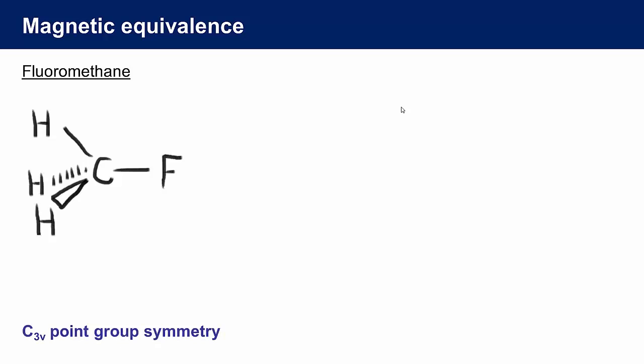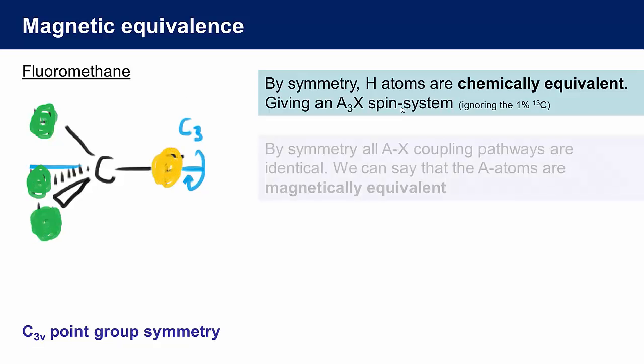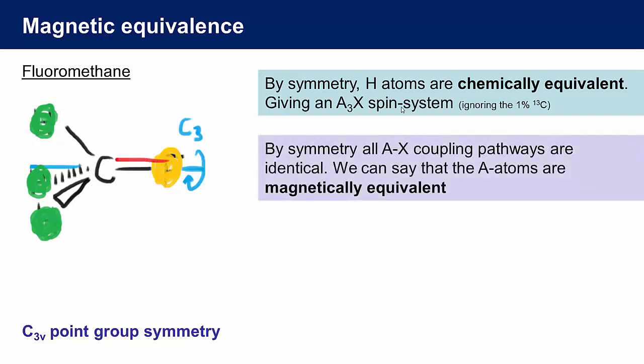Let's think about the NMR of fluoromethane. Here it is. Fluoromethane has a three-fold symmetry. All the hydrogen atoms are in the same chemical environment by symmetry, and that makes this an A3X spin system. Now let's think about the coupling interactions. Each A atom couples to the X, and vice versa. In this molecule, all three A to X coupling pathways are identical, because of the C3V symmetry of fluoromethane.